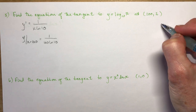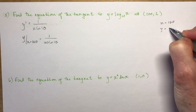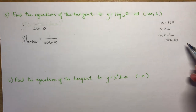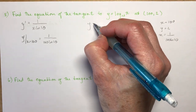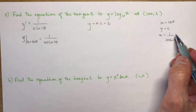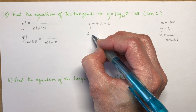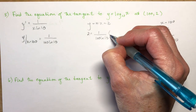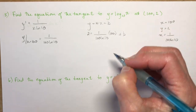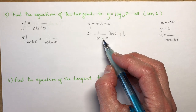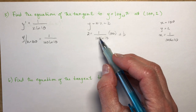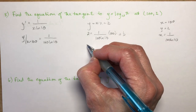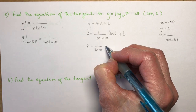So x equals 100, y equals 2, and slope equals 1 over 100·ln 10. Using y equals mx plus b, I plug in: 2 equals (1 over 100·ln 10) times 100 plus b. The 100s cancel, giving 2 equals 1 over ln 10 plus b, so b equals 2 minus 1 over ln 10.